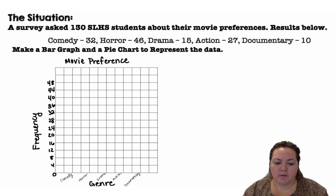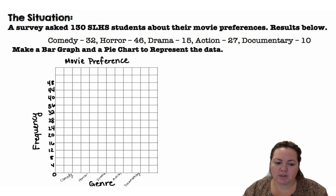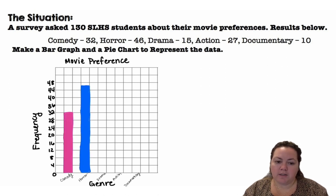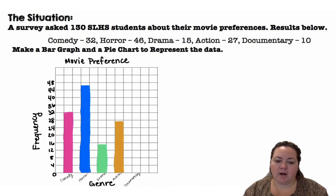Then I labeled my different genres: comedy, horror, drama, action, and documentary. And we are simply going to go up to 32 for comedy, 46 for horror, 15 for drama, 27 for action, and 10 for documentary. And that's a bar graph.